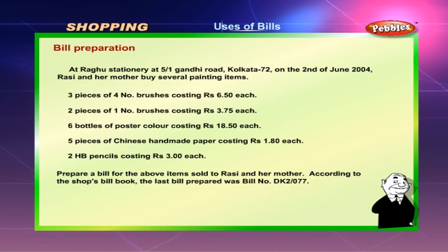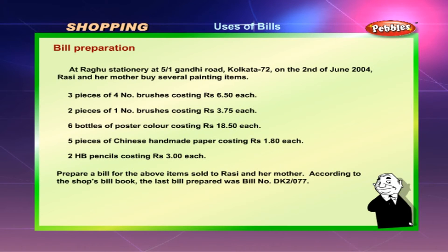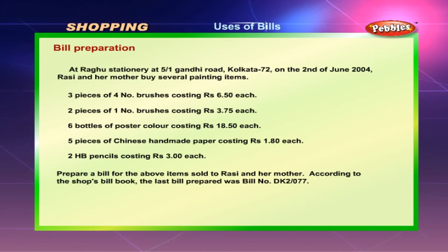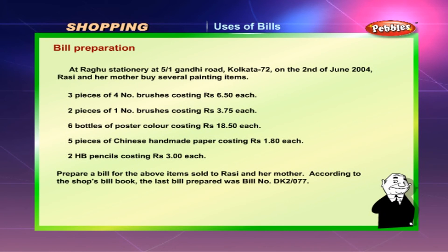Bill preparation: At Raghu Stationery, 5/1 Gandhi Road, Kolkata, on the 2nd of June 2004. Rousey and her mother buy: 3 pieces of No. 4 brushes at Rs. 6.50 each; 2 pieces of No. 1 brushes at Rs. 3.75 each; 6 bottles of poster colour at Rs. 18.50 each; 5 pieces of Chinese handmade paper at Rs. 1.80 each; and 2 HB pencils at Rs. 3 each.